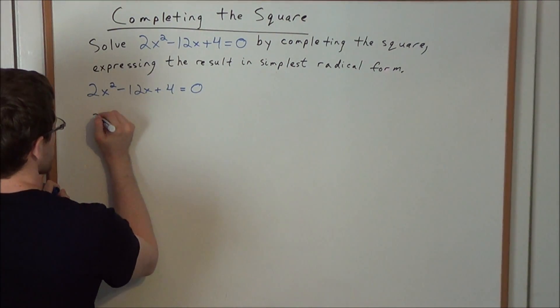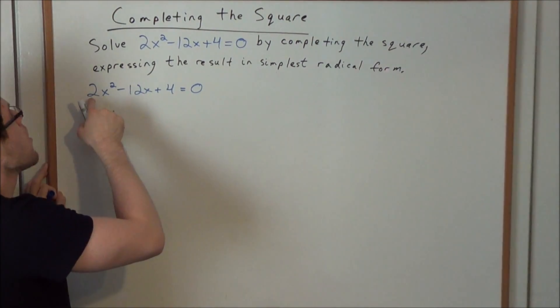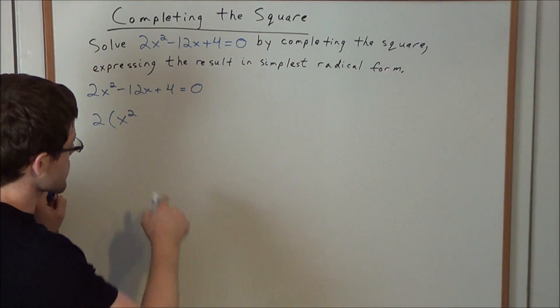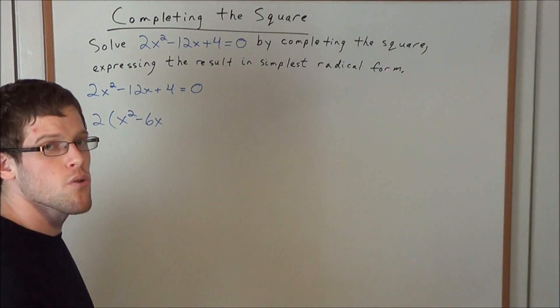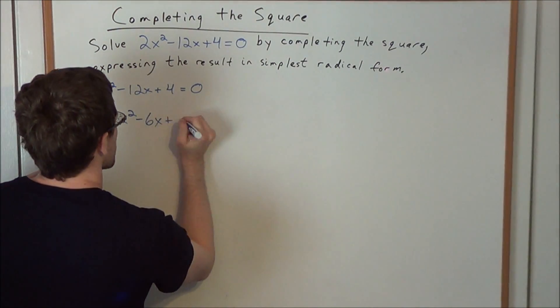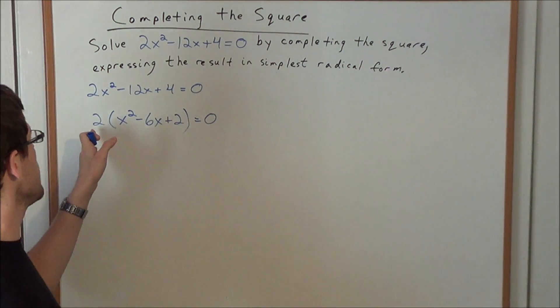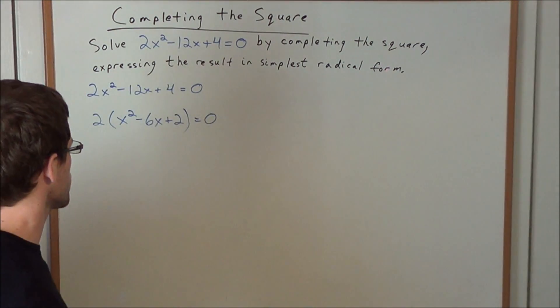So what we need to do in our first step is to factor this 2 out. When we factor a 2 away from 2x², we're left with x². When we factor 2 away from -12x, we're left with -6x. And finally, when we factor a 2 away from +4, we're left with +2. Now if you want to check this step, you can go ahead and redistribute this 2, but it should work out to the original quadratic equation.